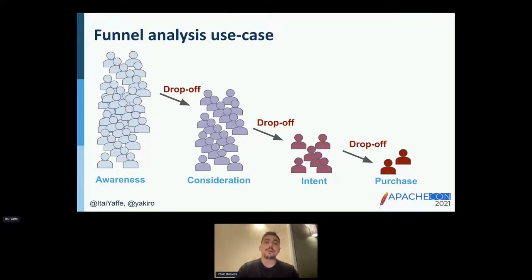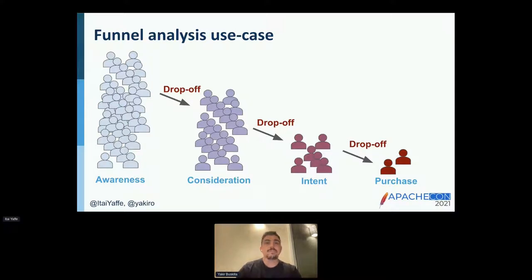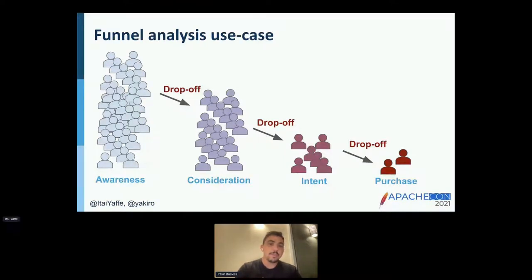The second use case is funnel analysis. Marketers need the ability to analyze campaign performance — specifically, how many people reached each stage in the funnel. The goal is to compare different funnels and understand which one produces the most purchases. Our goal is to analyze the different stages and report the number of unique persons that reached each stage, so the marketer can invest in the best-performing funnel.